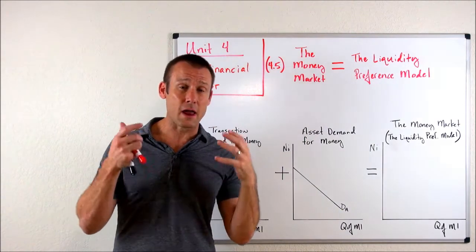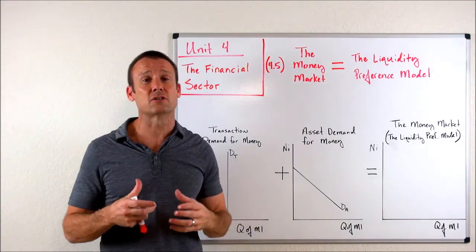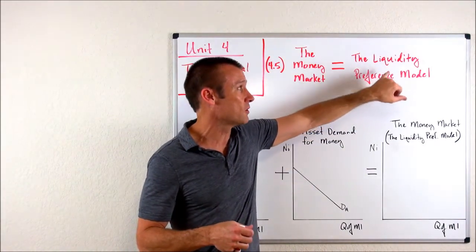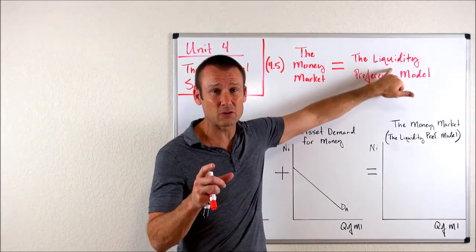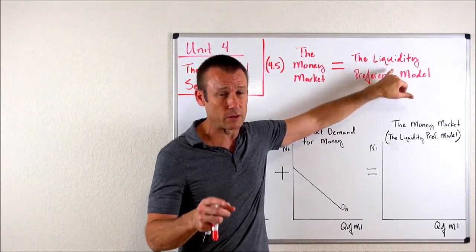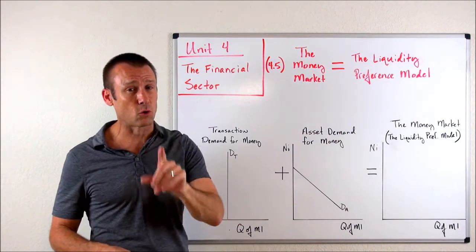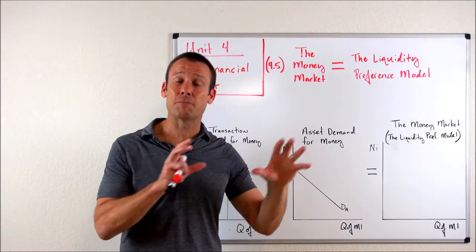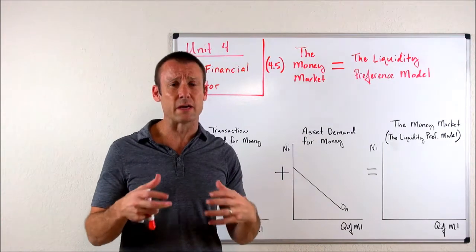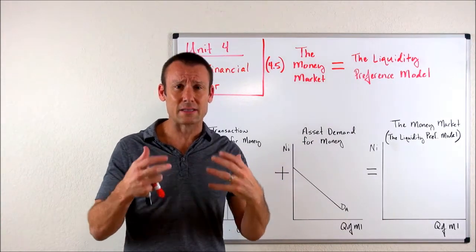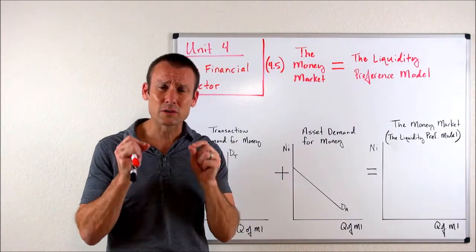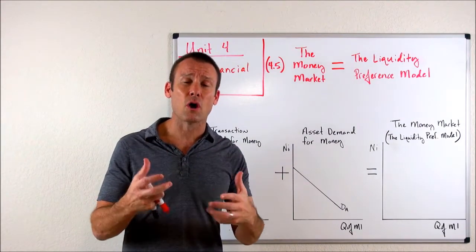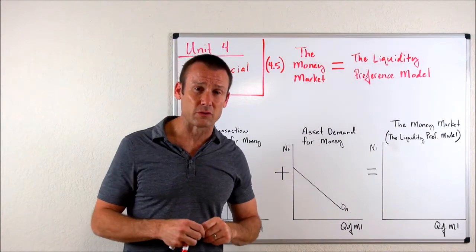What are liquid assets? That's money — that's our M1 assets: currency in circulation and demand deposits. It's best to think about this as a preference for holding some of our financial wealth as money, as completely liquid. There is a downside of holding some of your wealth as liquid: you're giving up the interest rate, or really any return. The main return we want to focus on is the interest rate. When you hold some of your wealth as a liquid M1 asset, you are foregoing the interest rate, and that'll be key as we study this model.